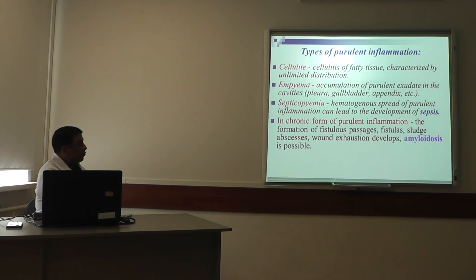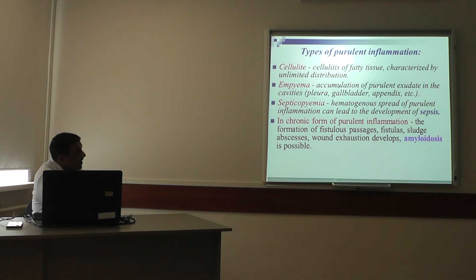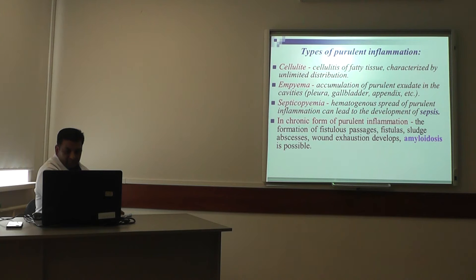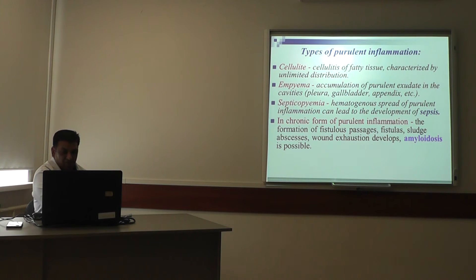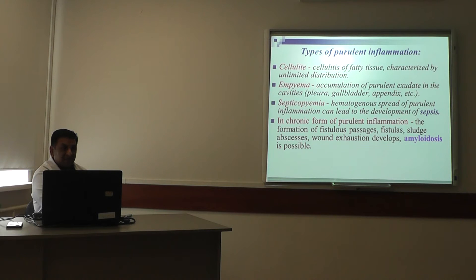Additional types of purulent inflammation include: cellulitis — inflammation of fatty tissue characterized by unlimited distribution; empyema — accumulation of purulent exudates in cavities, especially the pleural cavity, gallbladder, appendix, etc.; and septicopyemia — hematogenic spread of purulent inflammation that can lead to the development of sepsis. In chronic form of purulent inflammation, the formation of fistulas, phagedenism, sliding abscess, wound exhaustion, and amyloidosis is possible.